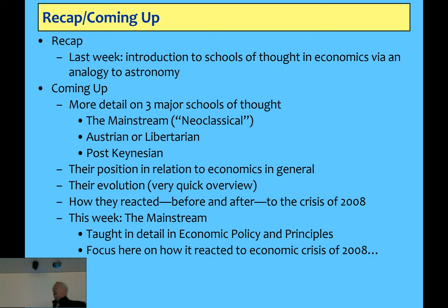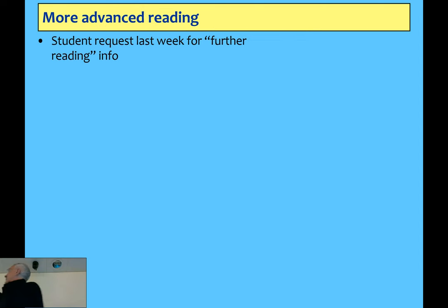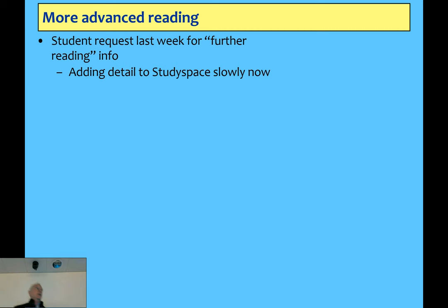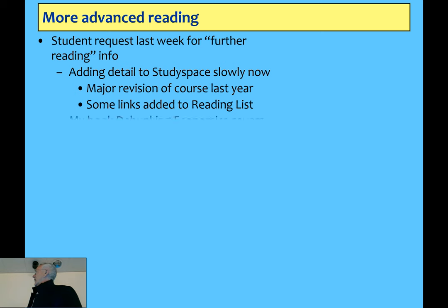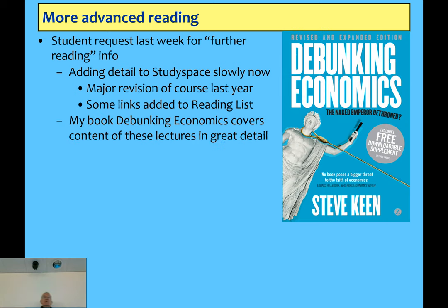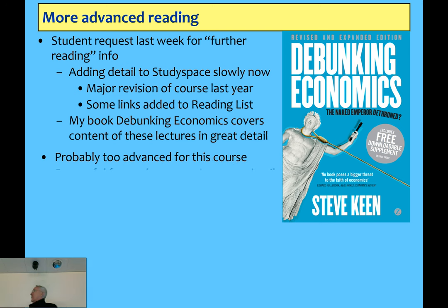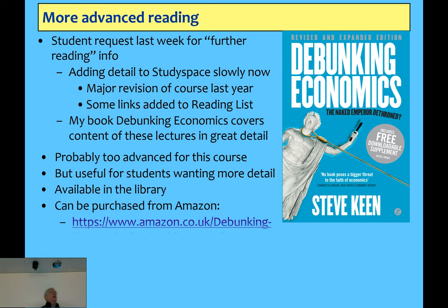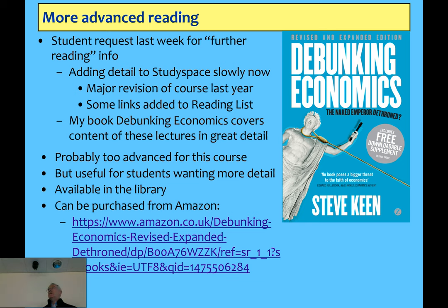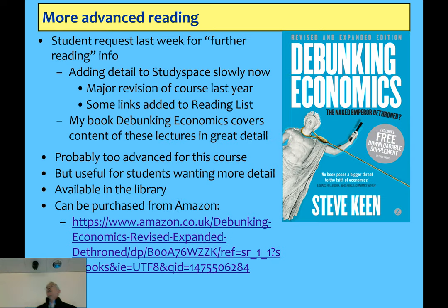Somebody asked for more advanced reading last week. If you really want to get into detail on how I approach economics, there's a book I recommend. I didn't make it a required text because I'm not about to force you to pay me money. But if you want to take a look, it's in the library and available through Amazon. There's no mathematics inside, but people tell me it's heavy going — it goes in quite a bit of detail step by step through the subject. It's 125,000 words, so that's a fair amount of detail. But you don't need it for this subject — it's more detail for those who want to go further.